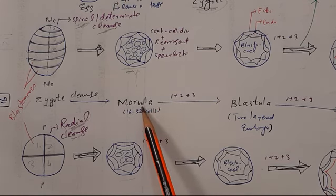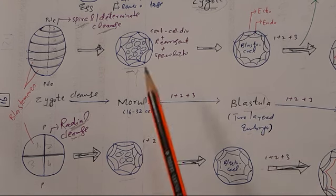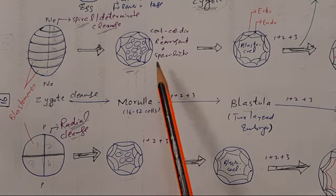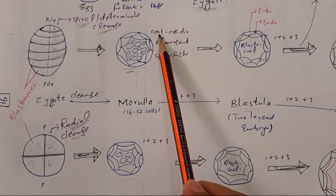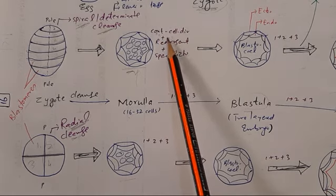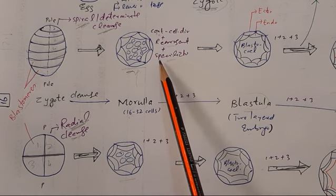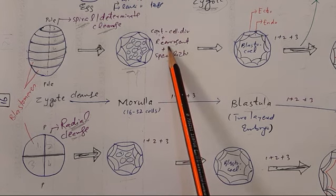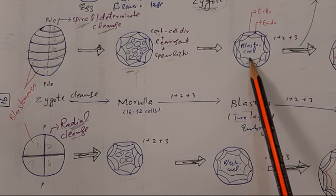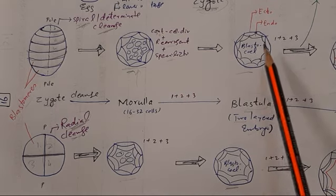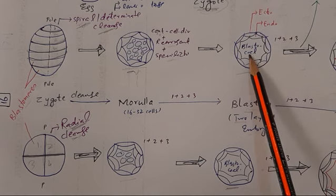After morula, a hollow ball of cells is formed — or two-layered embryo — called blastula. The blastula is formed through three processes in the morula: continuous cell division, rearrangement of cells, and specialization. As a result of these three processes, the morula changes into a hollow ball of cells — a two-layered embryo called blastula. The blastula has a cavity called blastocoel.